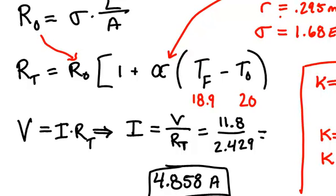Alright, so as we do the calculations here, I get a voltage in the problem of 11.8. And I got the resistance at this new temperature to be 2.429. So dividing these two values out, I get a final answer of 4.858 amps. Alright, see you at the next video. Thank you.